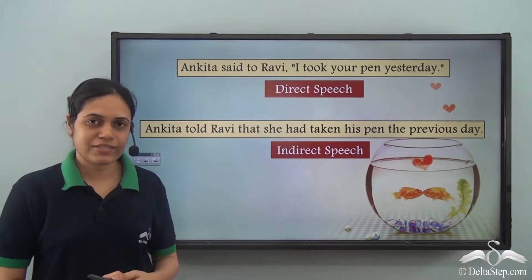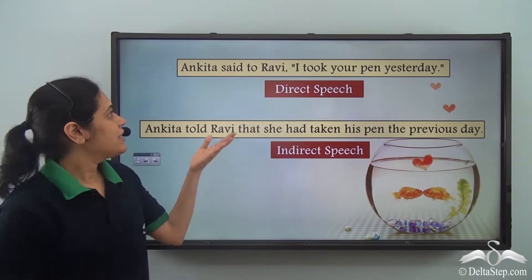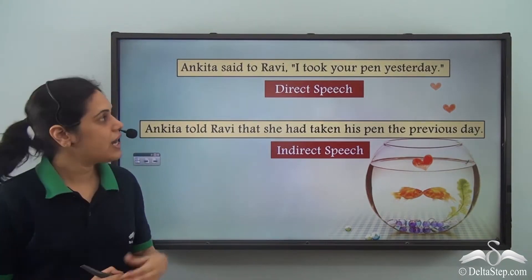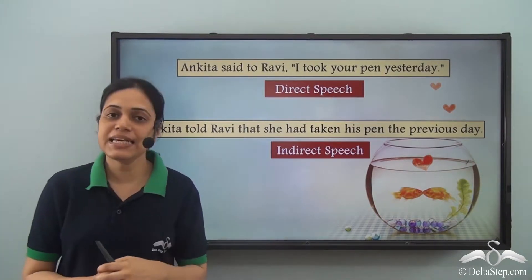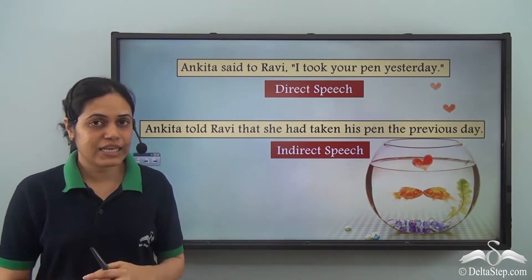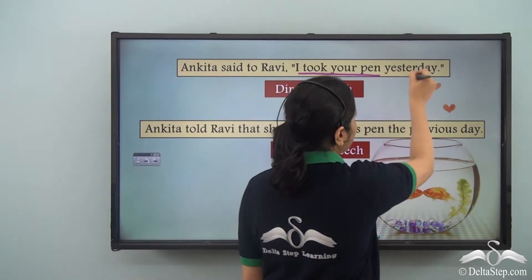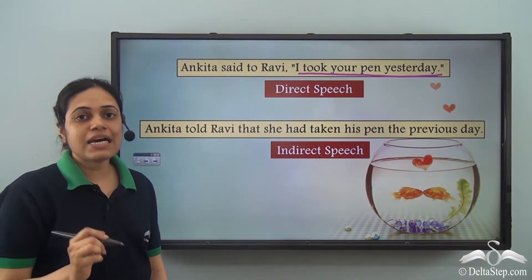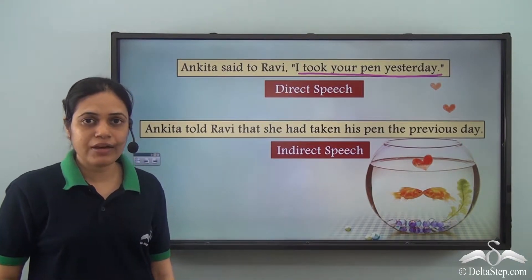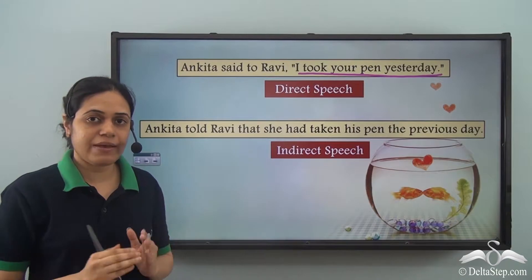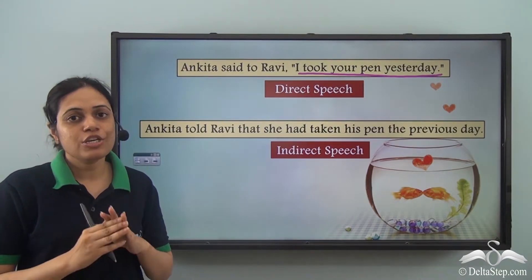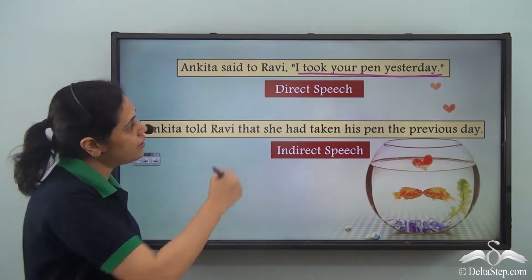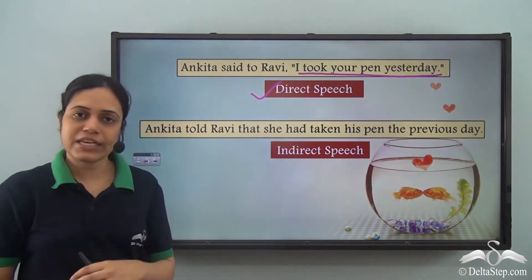Look at these two sentences. This sentence says, 'Ankita said to Ravi, I took your pen yesterday.' In this case we are directly quoting the words of Ankita. These are the exact words of Ankita and we have put them within inverted commas — we are directly quoting the words of the speaker. So this is direct speech.